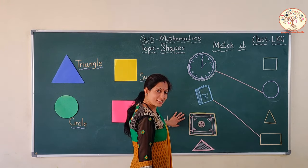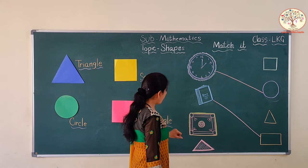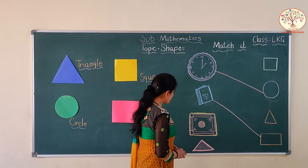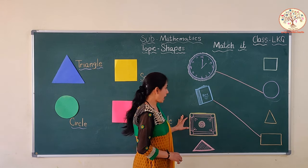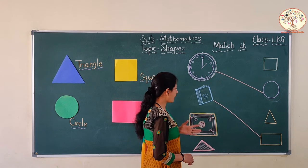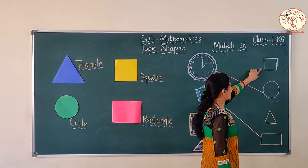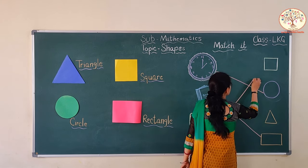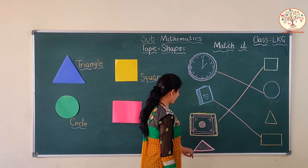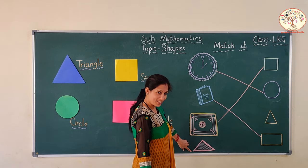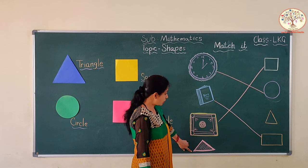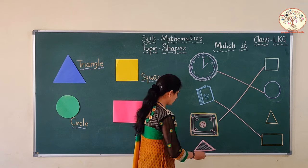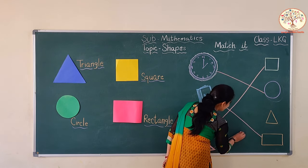Now, what is this? You know this — this is a carom. Do you like to play carom? What is the shape of carom? Square. Very good. Where is the square here? This is a square. So, we will match the carom to the square. And do you like sandwiches? This is a sandwich, and it is the shape of a triangle. So, we will go to the triangle.